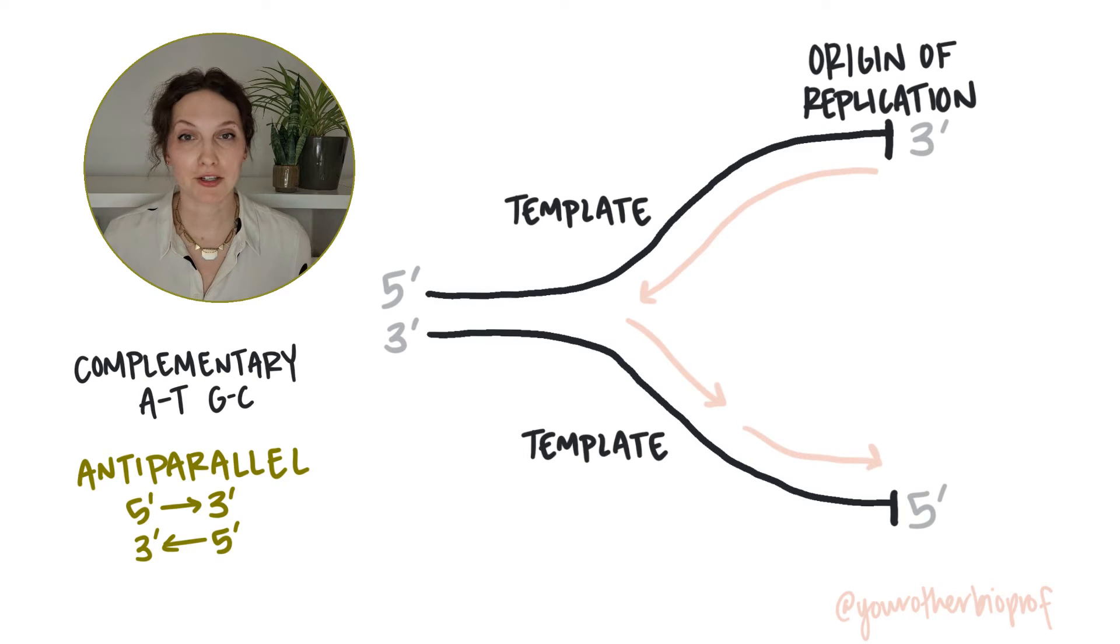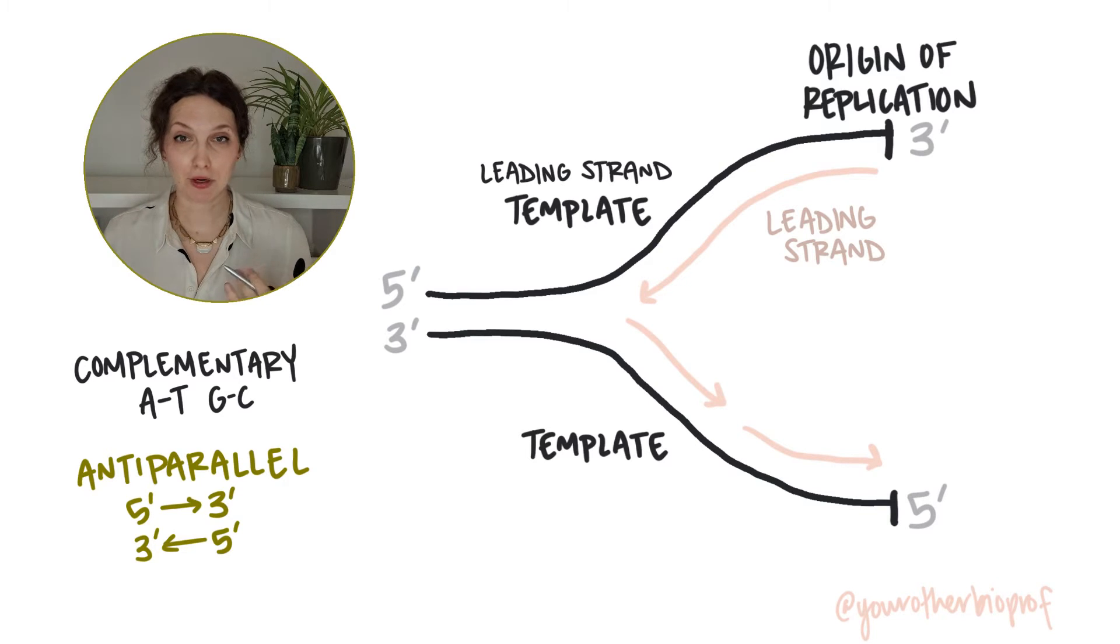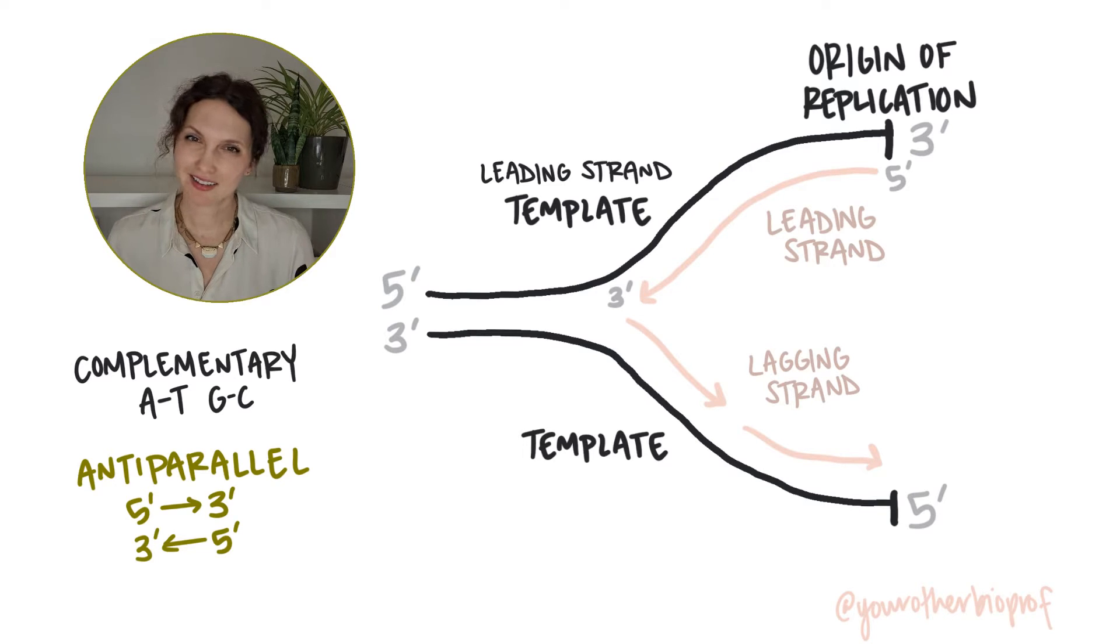Inside the fork are the new DNA strands being produced. You'll notice that one of them is produced in one long continuous piece. This is the leading strand. It's going to be generated five prime to three prime into the fork, and the other one will be made in little fragments we call Okazaki fragments. This is the lagging strand. But why?